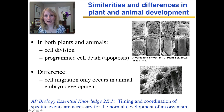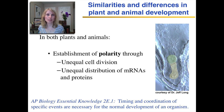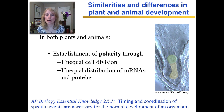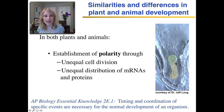Now, a difference between plant and animal development is that cell migration — the movement of cells — only occurs in animal development. But let's look at another similarity: the establishment of polarity. When I say polarity, I mean any time there's a difference between two sides — it could be a difference between two sides of a cell or the two sides of an embryo. In both plants and animals, you have establishment of polarity through unequal cell division, such as what you saw in the plant embryo.